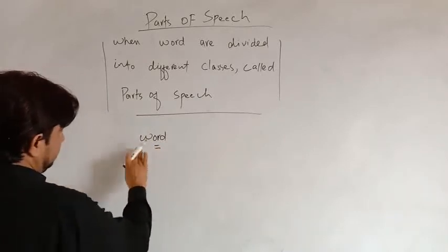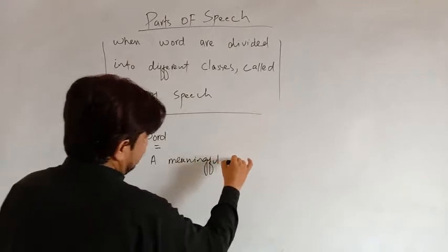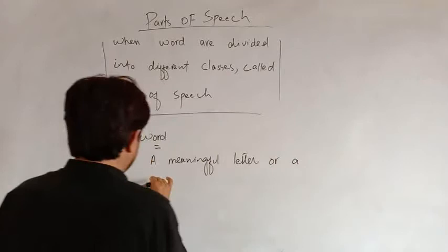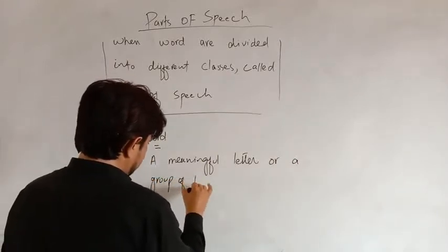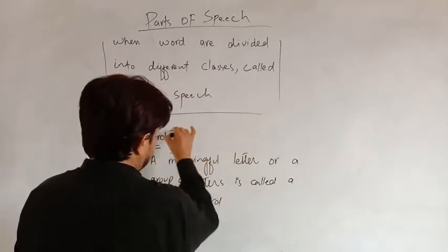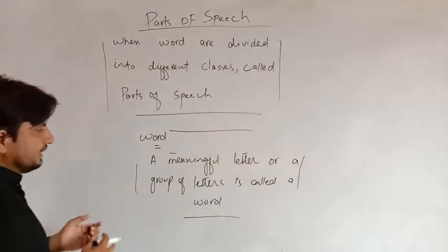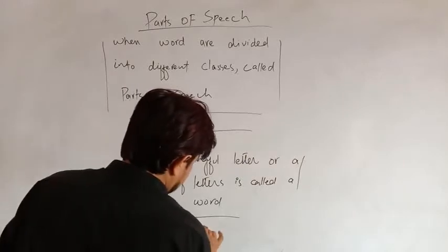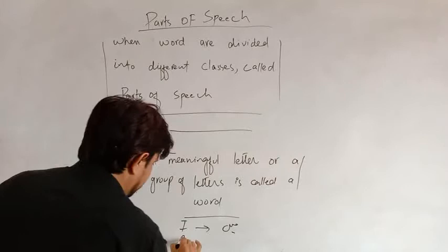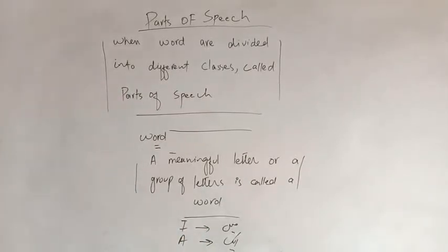When we talk about words, it is very important. A meaningful letter or a group of letters is called a word. It means a single letter may be a word. When we talk about 'I', it is a single letter and it has its meaning. When we talk about 'A', it is also a single letter. But these two single letters provide some specific meaning, so a single letter which has some type of meaning can also become a word.